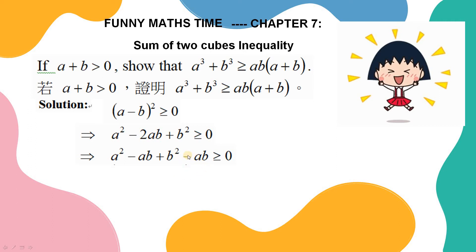And then move this minus ab to the right. The inequality will become a squared minus ab plus b squared, greater than or equal to ab. Why I add a bracket to the left hand side? Because I want to multiply something onto both hand sides of this inequality.